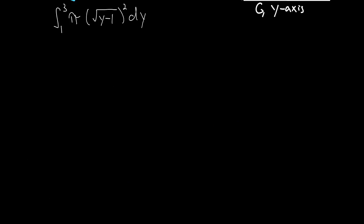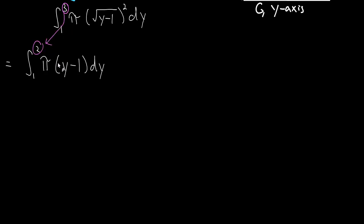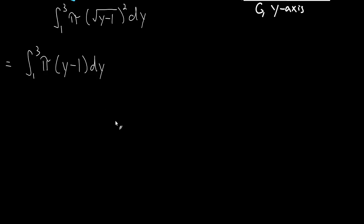Let's go ahead and solve this integral. The first thing we can do is square that square root, which eliminates it, giving us the integral of pi times (y minus 1) dy. I want to point out a copying error here — I wrote y minus 2 instead of y minus 1, which is the kind of mistake that happens often and will cost you points, so try to catch it as it's happening.